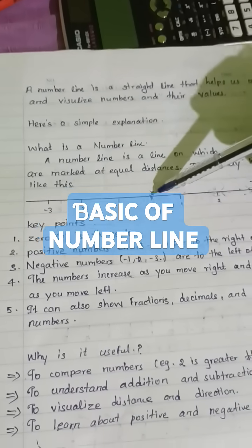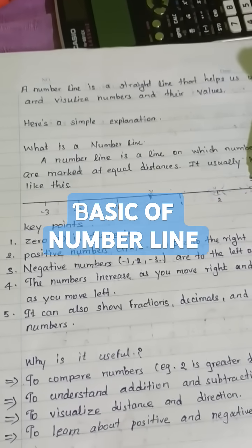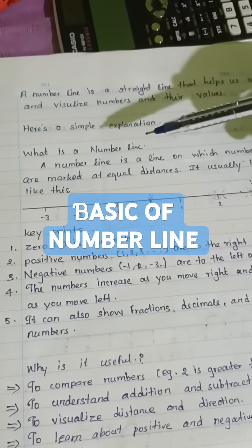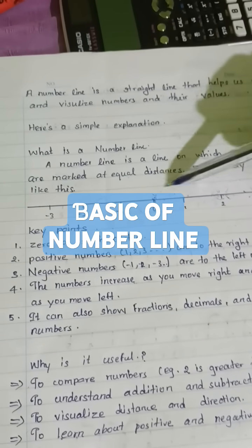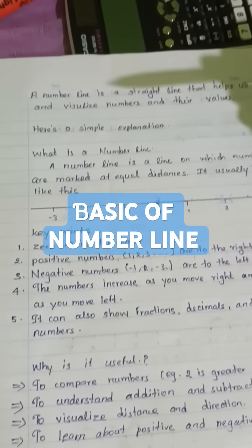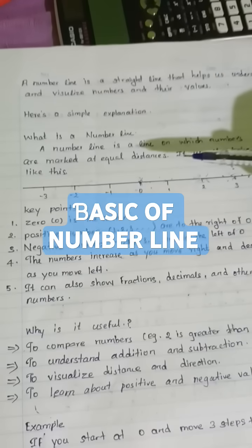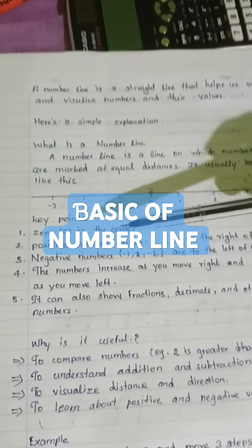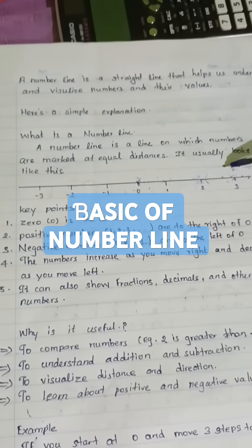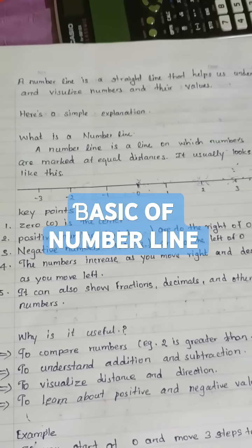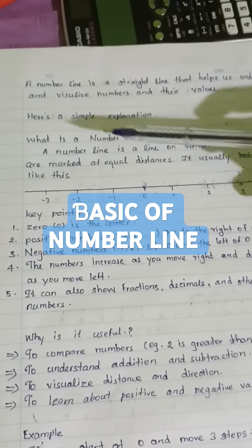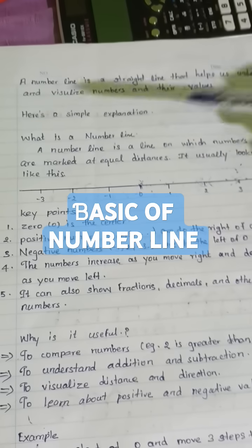Zero is the center point. The right side has positive numbers, the left side has negative numbers. Some key points: zero is the center, positive numbers are to the right side of zero, negative numbers are to the left side of zero.